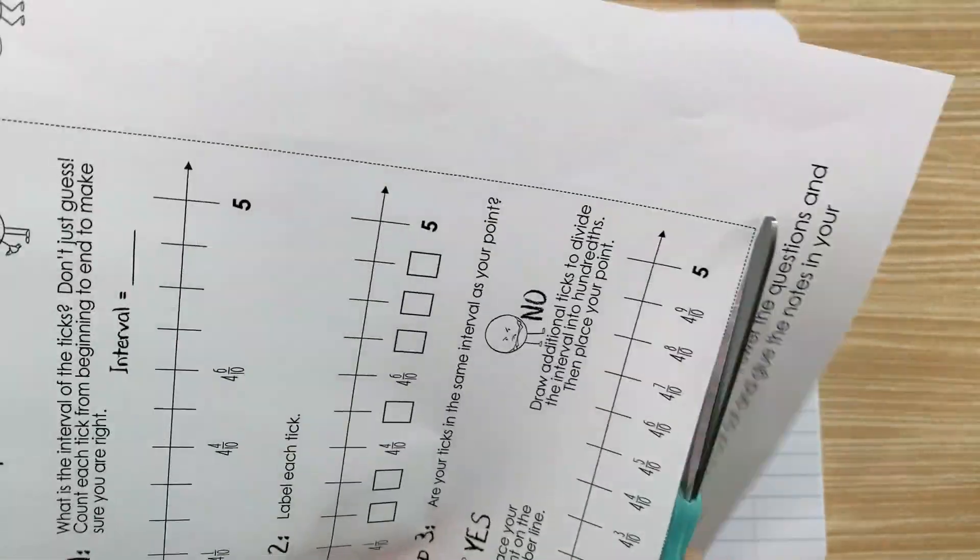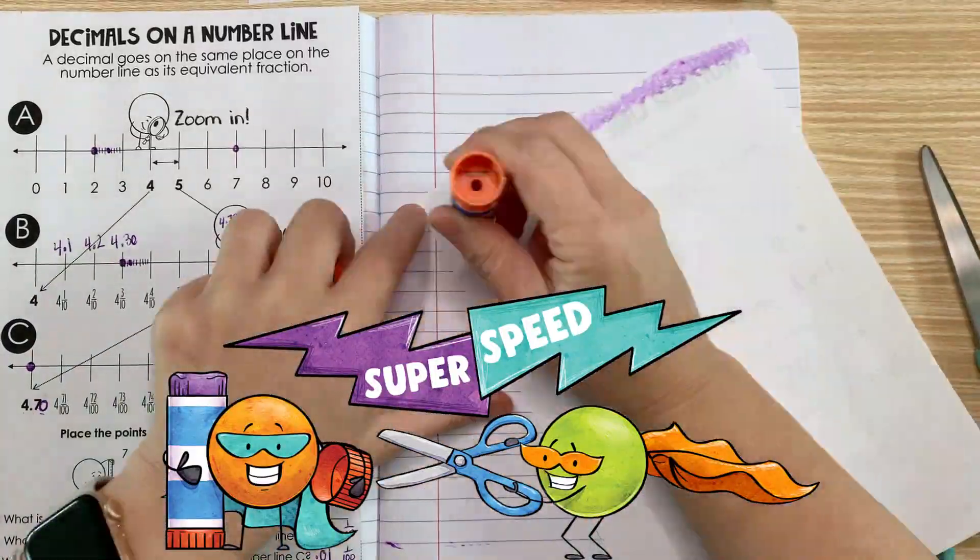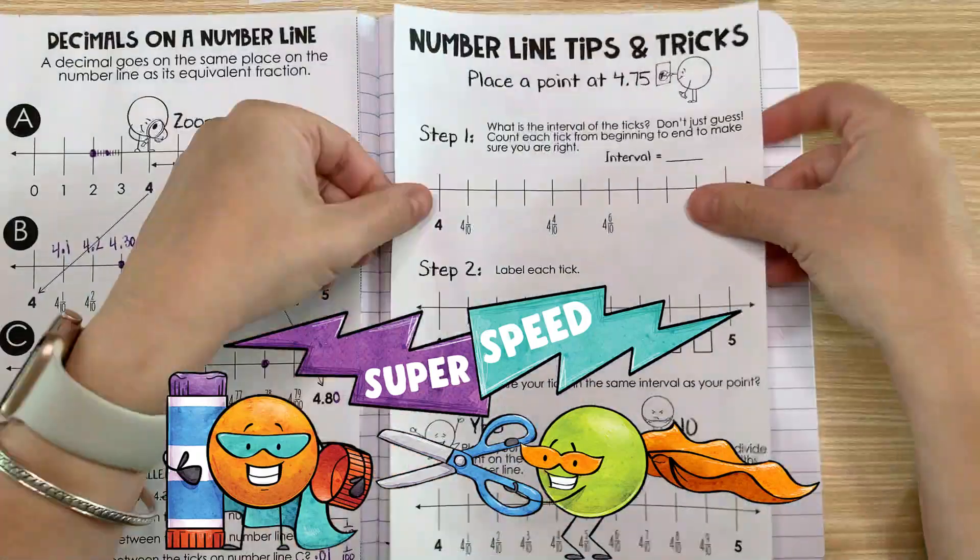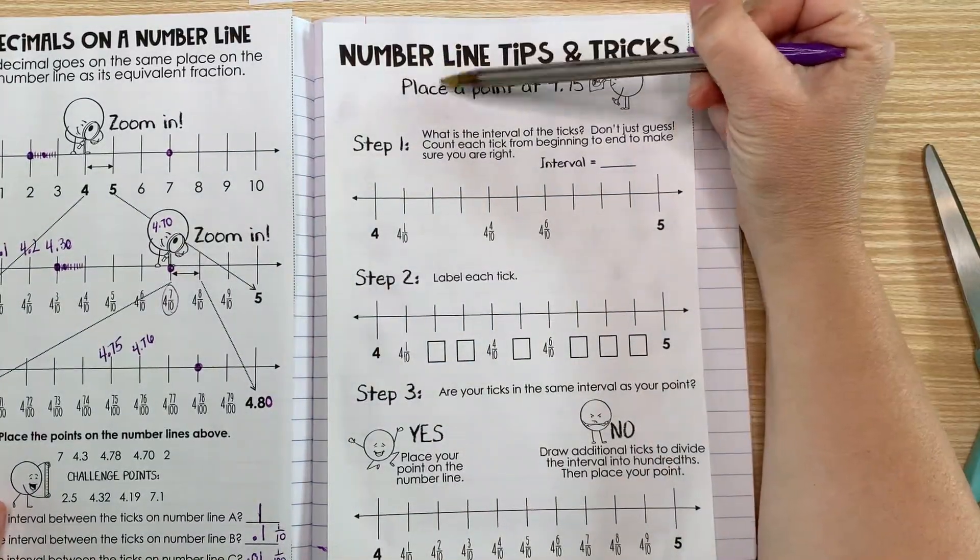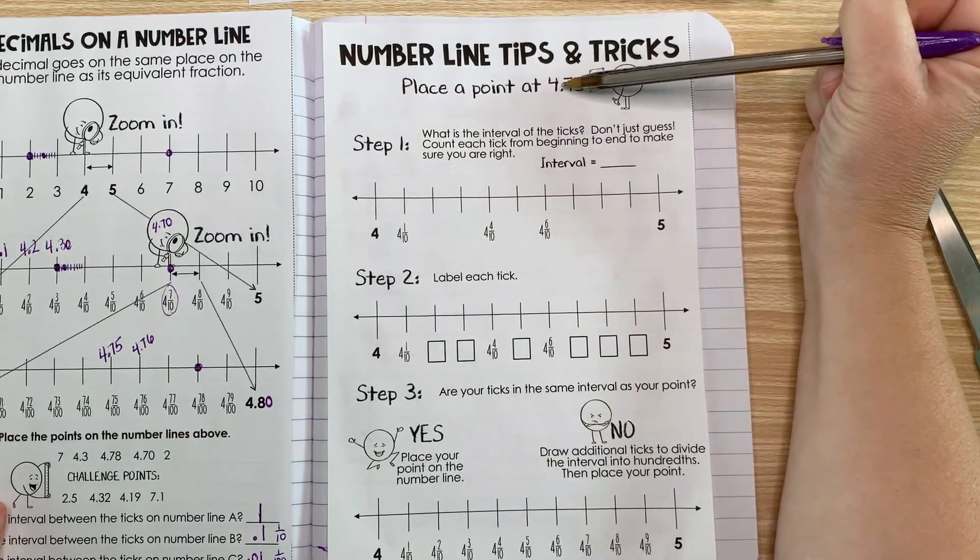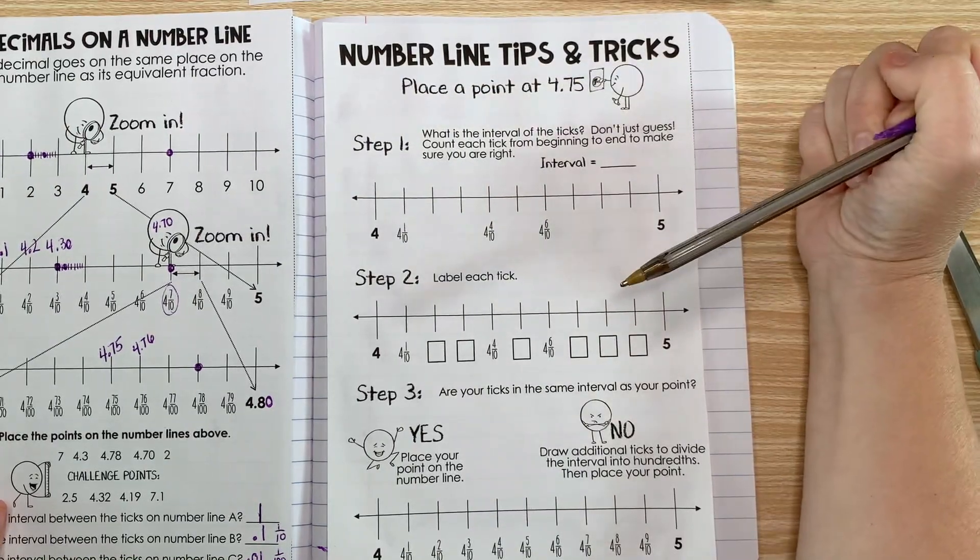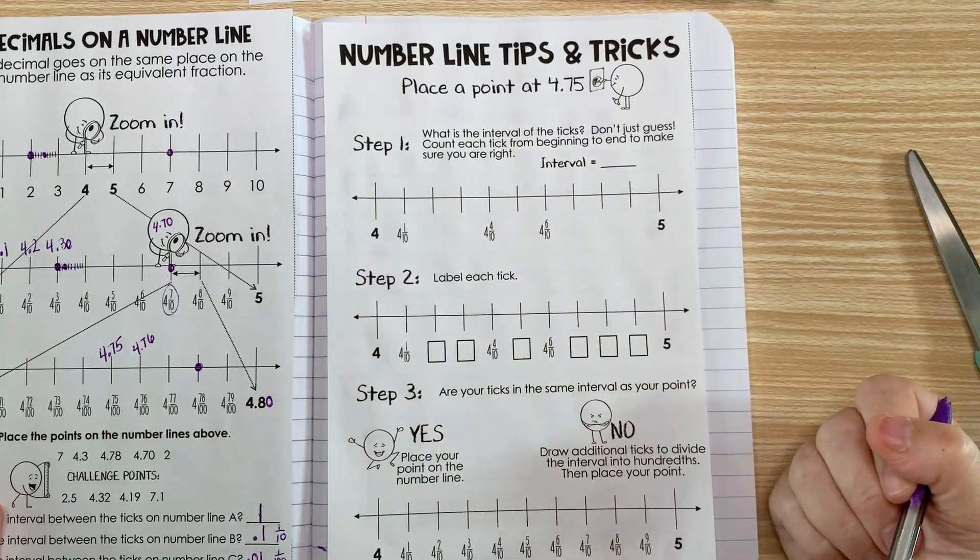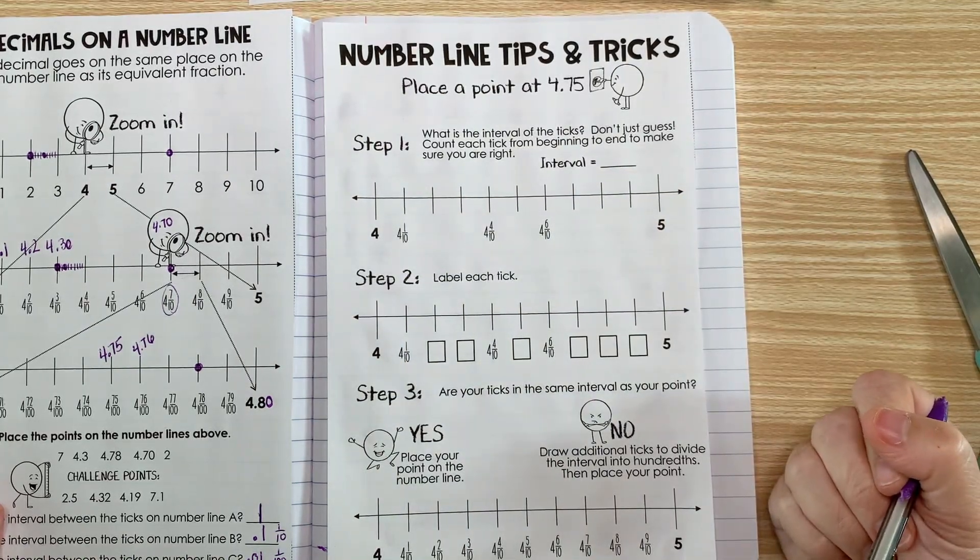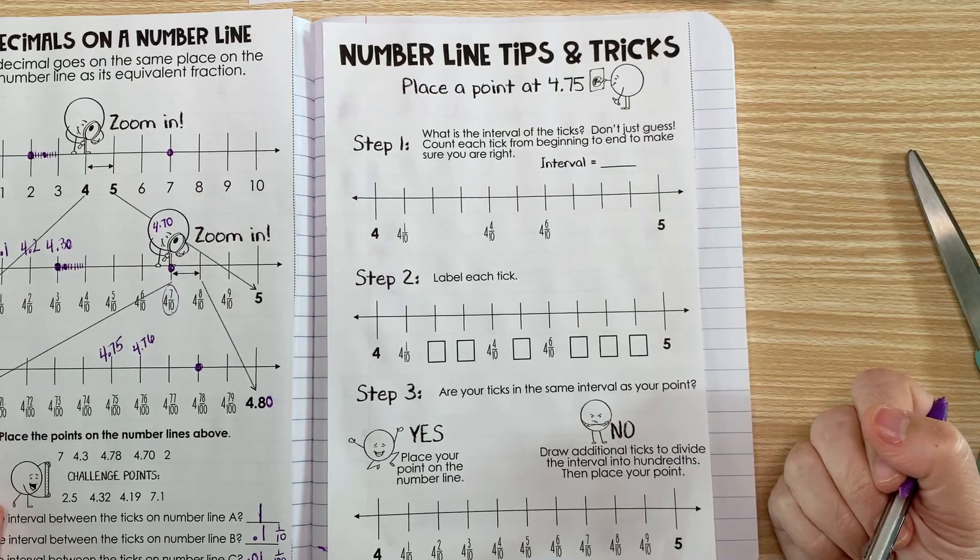So we are going to put a point at 4 and 75 hundredths. There are three steps that you can work through when you need to find a point on a number line. Let's do step one together.